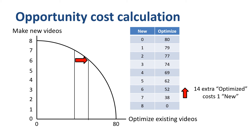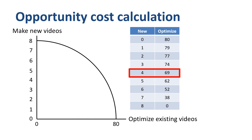It gets incrementally harder to optimize more existing videos. What the economics professor is trying to show you is that under these assumptions, you would be better off splitting your time between making new videos and optimizing existing videos two weeks in a row, as that would give you a total of 8 new videos plus 138 optimized existing videos — compared to spending one full week making 8 new videos and not optimizing any, and the other week making 0 new videos and optimizing 80 existing ones.